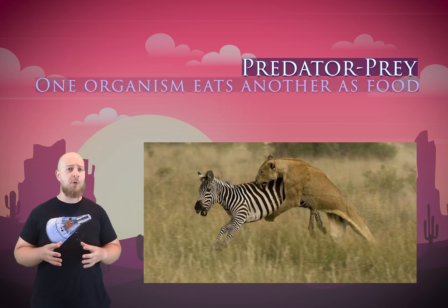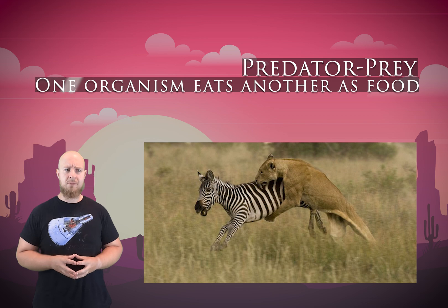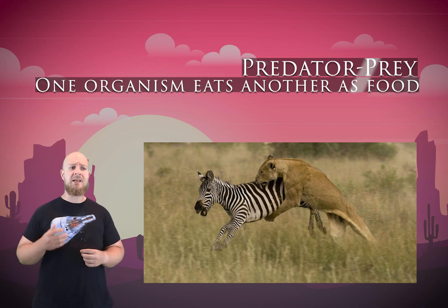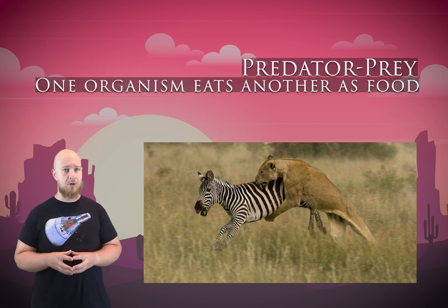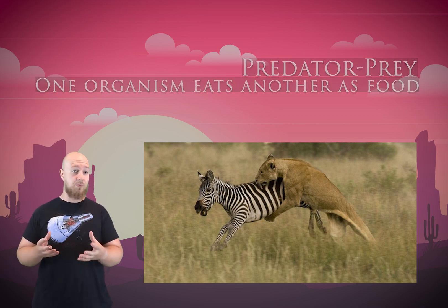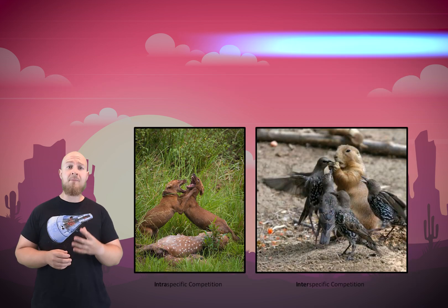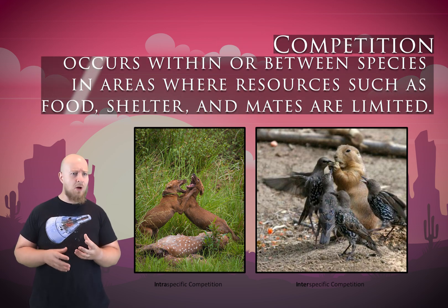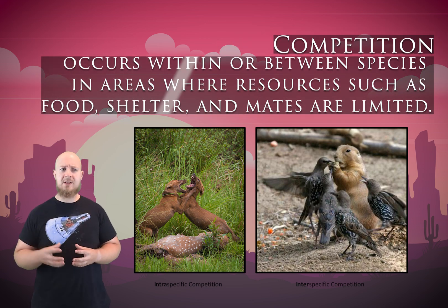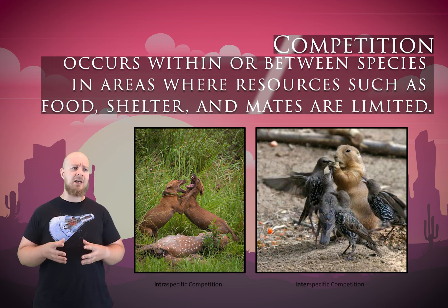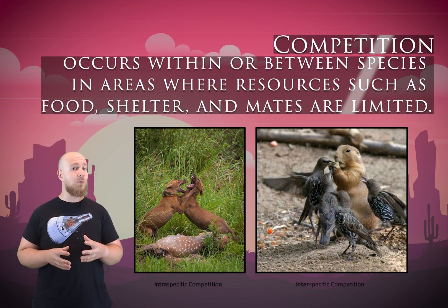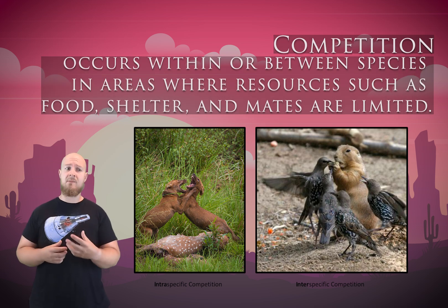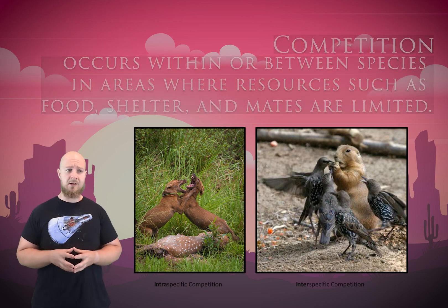Here are the ways that living things can interact with each other. A predator-prey relationship is where a predator organism eats another organism, the prey. Competition can occur within or between species in an area where resources such as food, shelter, and mates are limited.